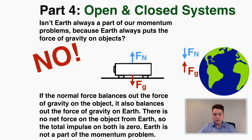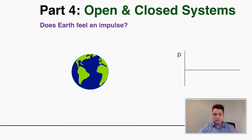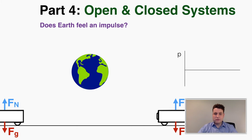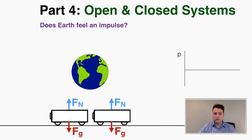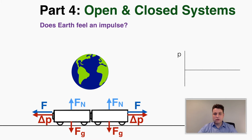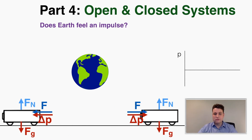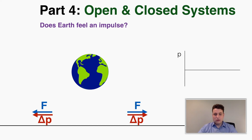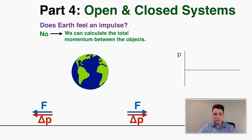I'll give you a few examples and ask whether earth feels an impulse in each specific example. My first example is two carts moving horizontally and bumping into each other. The force of gravity and the normal force are balancing each other out, so the only forces on these carts are coming from each other. Therefore the change in momentum is only occurring between those two carts — the earth is not involved in that impulse, so we can use the conservation of momentum.